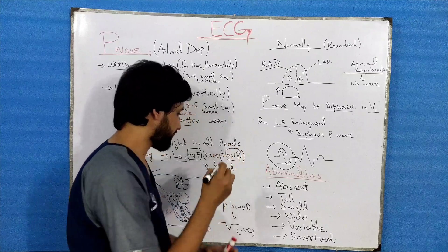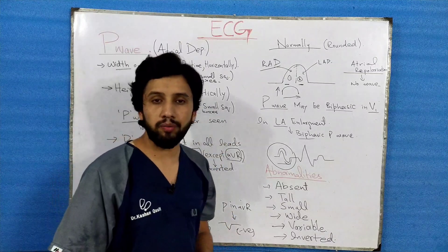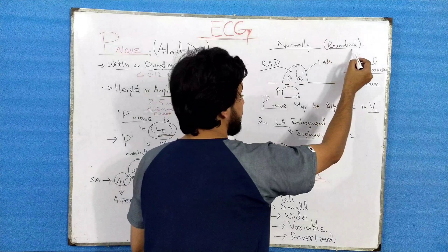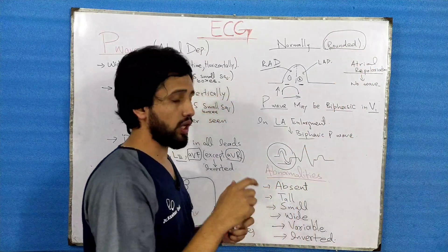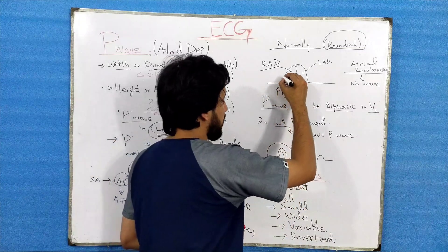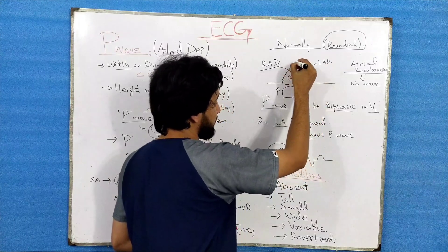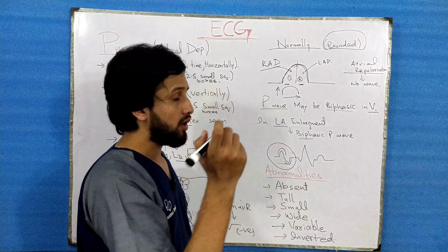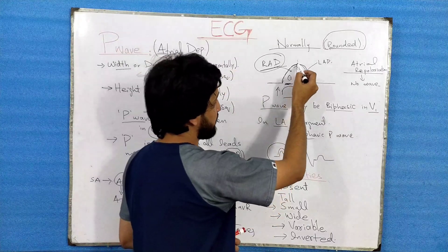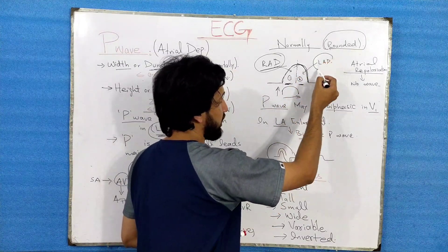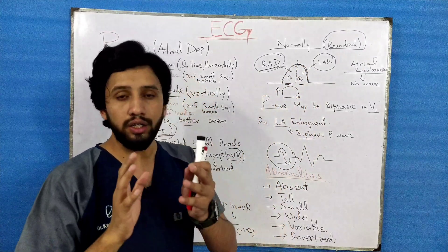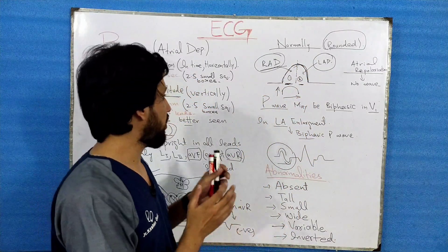The normal morphology of the P wave is rounded — neither notched nor peaked. When you see it on the ECG paper it appears smooth and rounded. This whole rounded P wave is divided into two parts: the first part shows right atrial depolarization, and the second part shows left atrial depolarization. Together, the whole rounded P wave represents depolarization or contraction of the atria of the human heart.